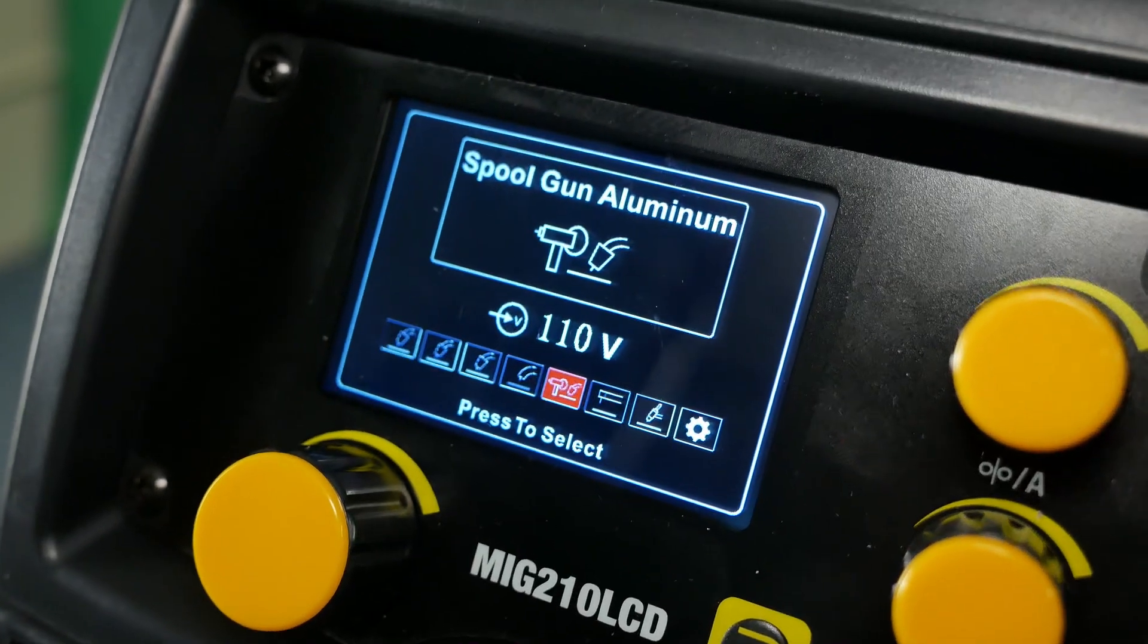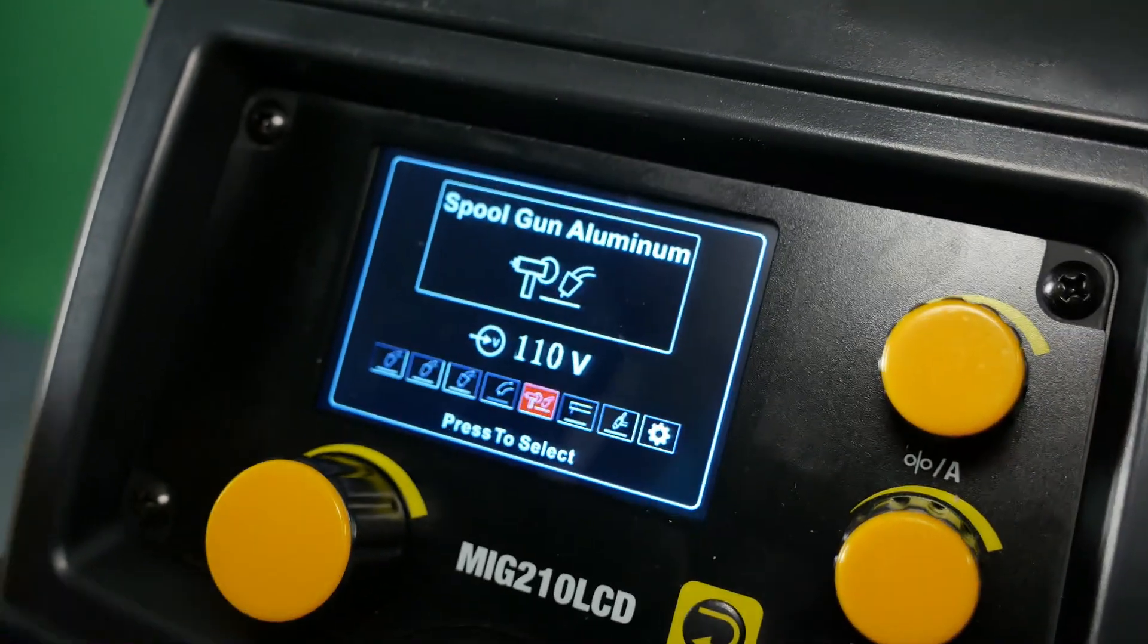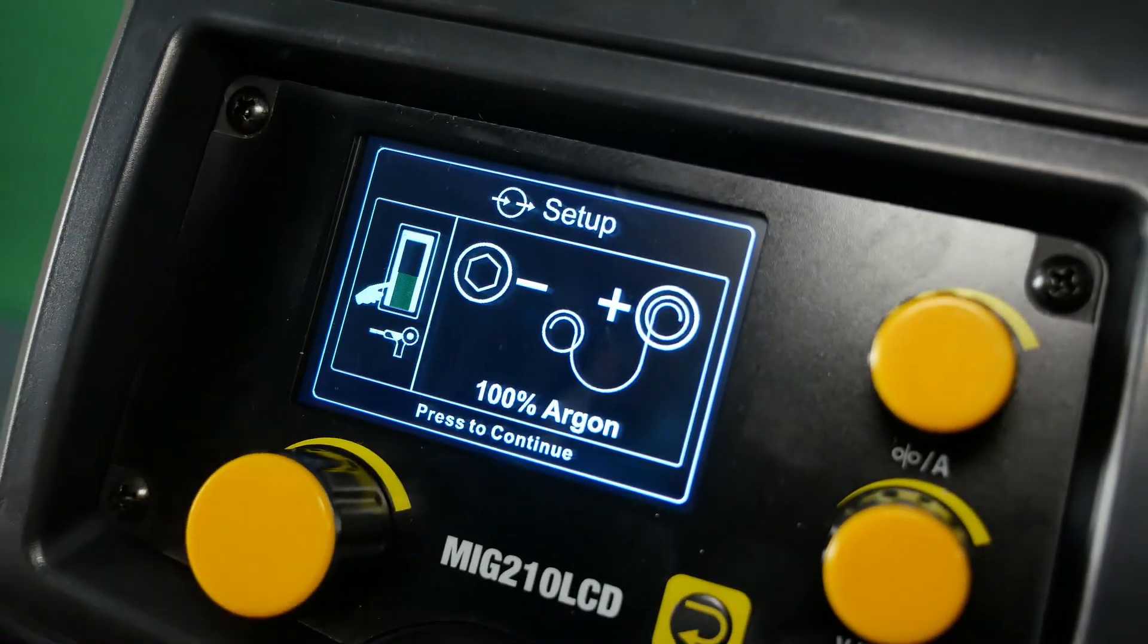The MiG-210 LCD is a brand new release from WeldPro and it comes with an advanced spool gun menu. Setting up and running aluminum spool gun has never been easier regardless if you're a beginner or an advanced welder.